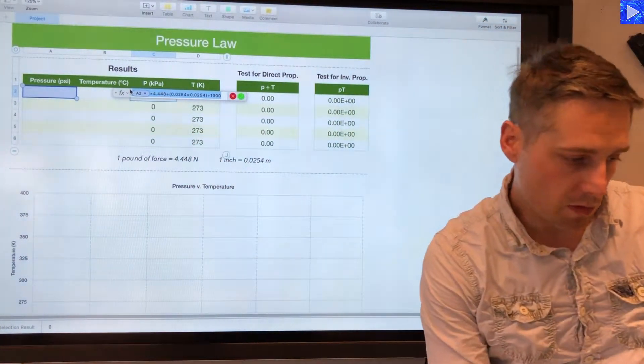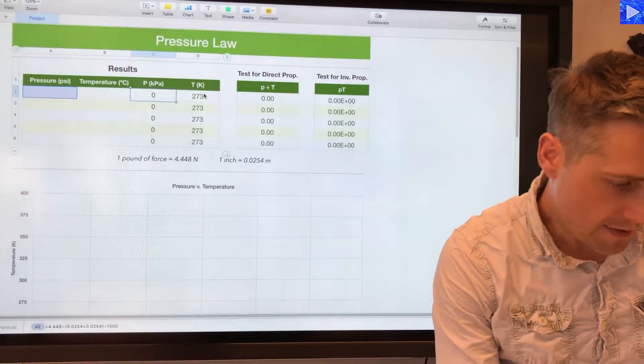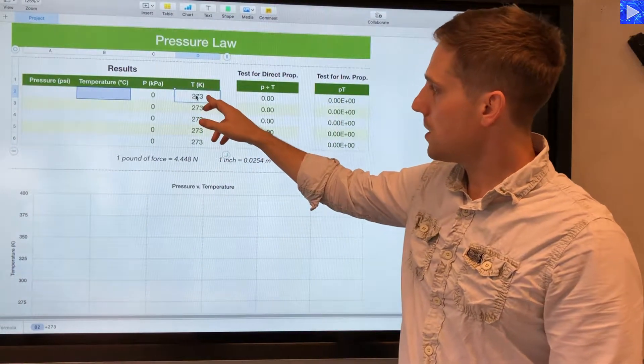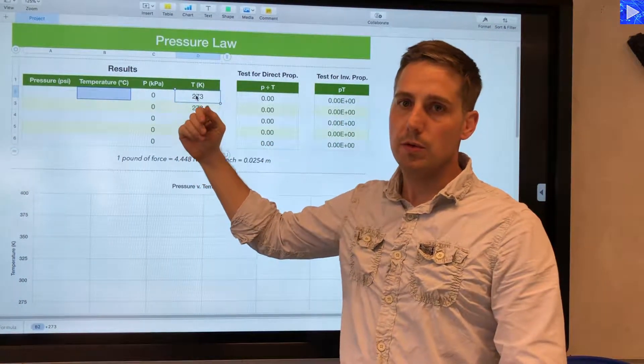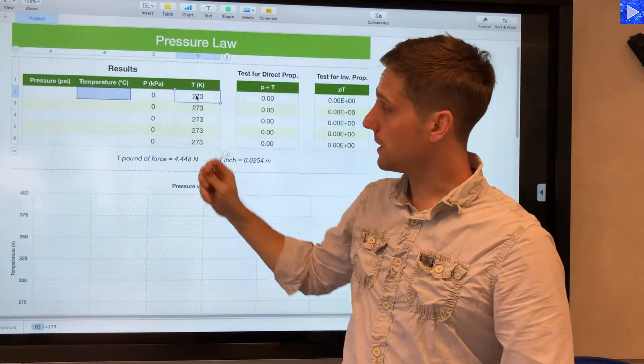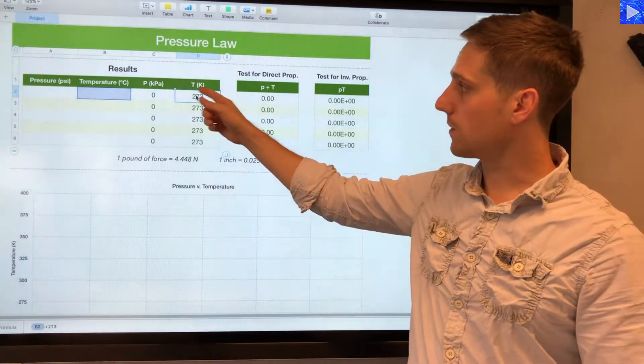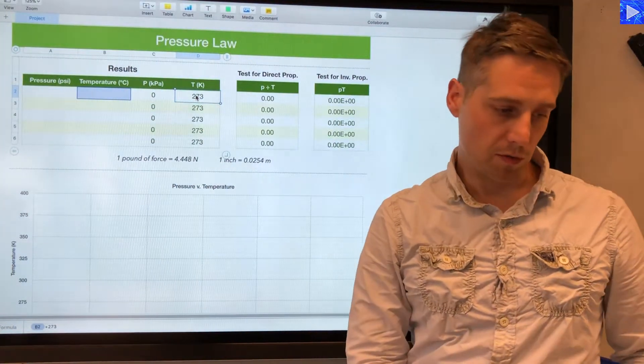So that's what's happening in column C, and then in column D where I'm converting the temperature into Kelvins from degrees C, I need to add 273 to that, so all those values are adding 273.